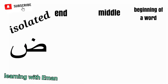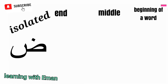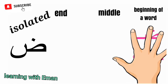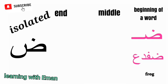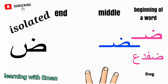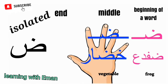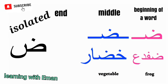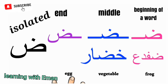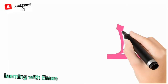Dad sounds like the letter D but much, much thicker and deeper sounding. At the beginning of a word, like 'Dafda', meaning frog. At the middle of a word, like 'Khudar', meaning vegetable. At the end of a word, like 'Baad', meaning egg.